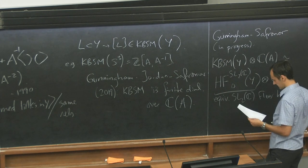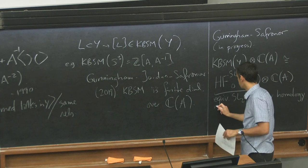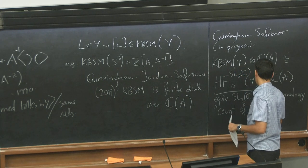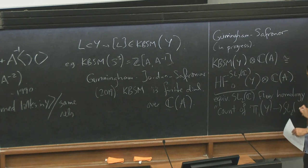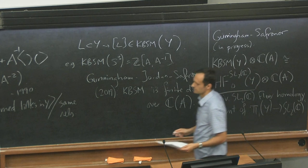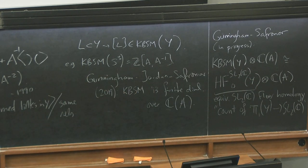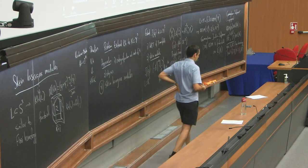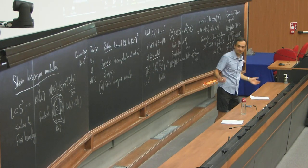is the equivariant SL2C Floer homology of Y, again, over the same field of fractions. So this is some version of what I defined with Mohamed Abouzaid a few years ago. It's not quite the one in our paper. It's equivariant and just a degree zero part.